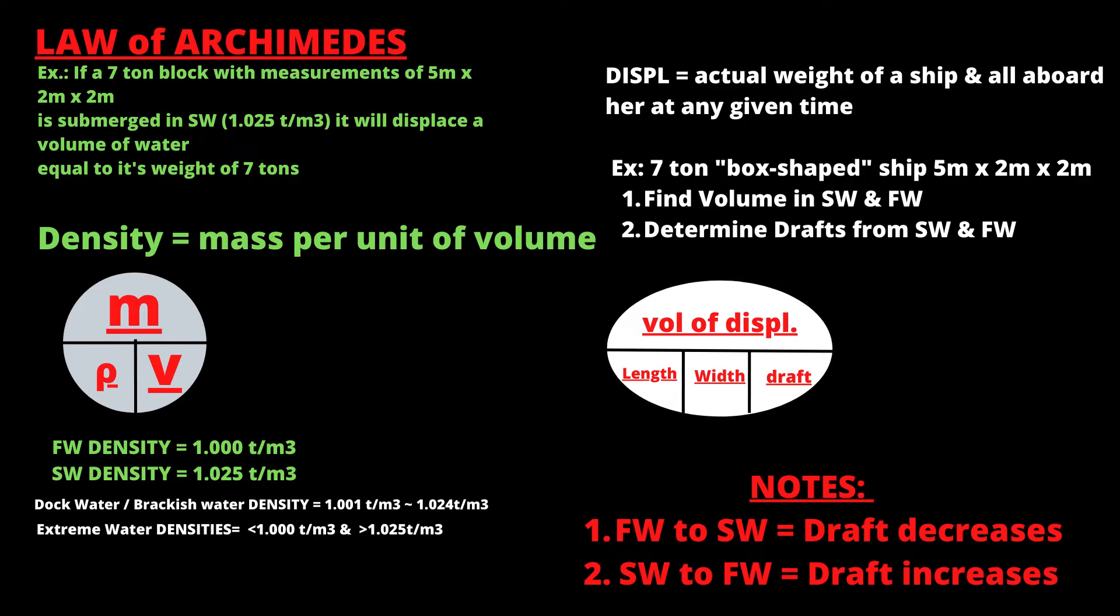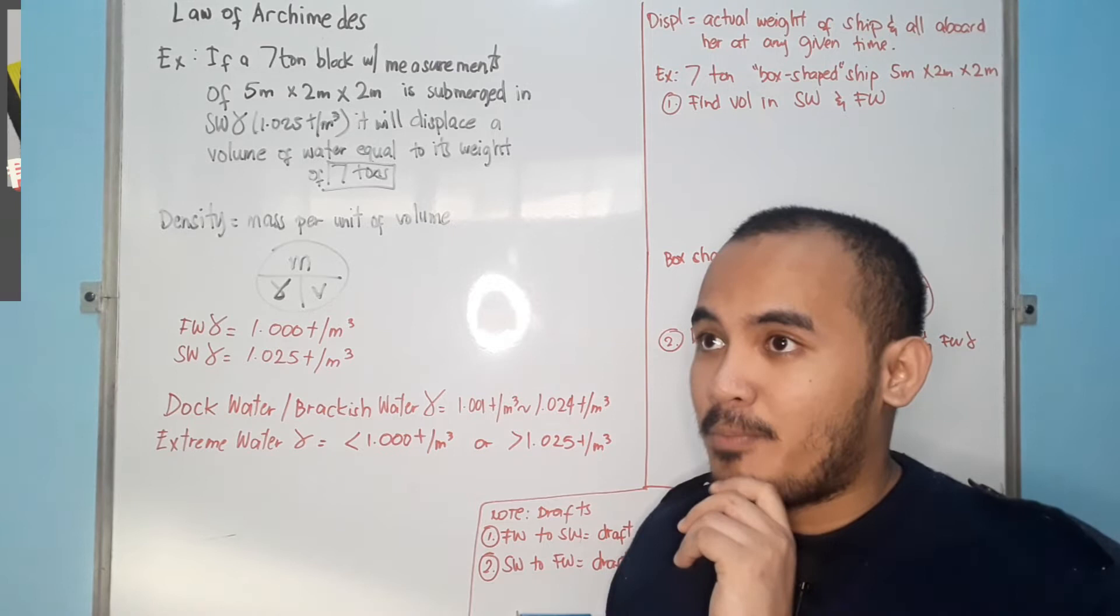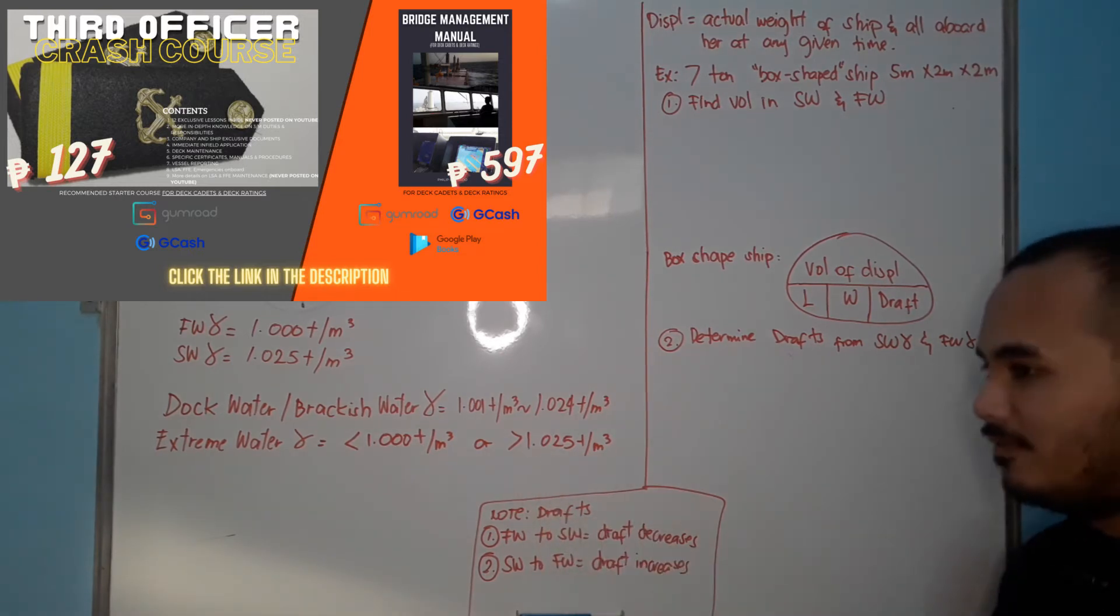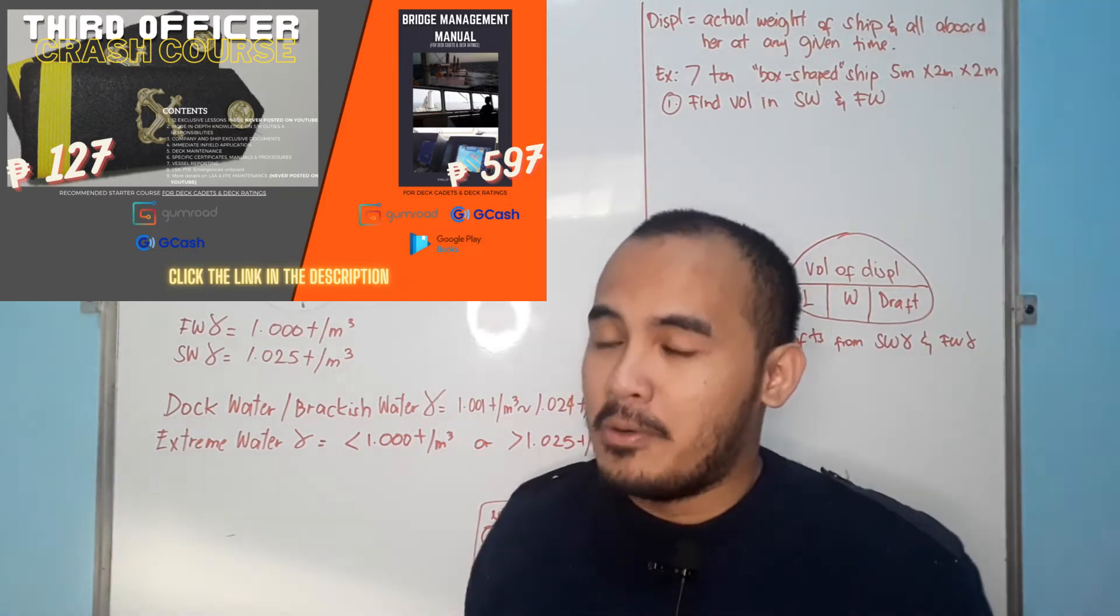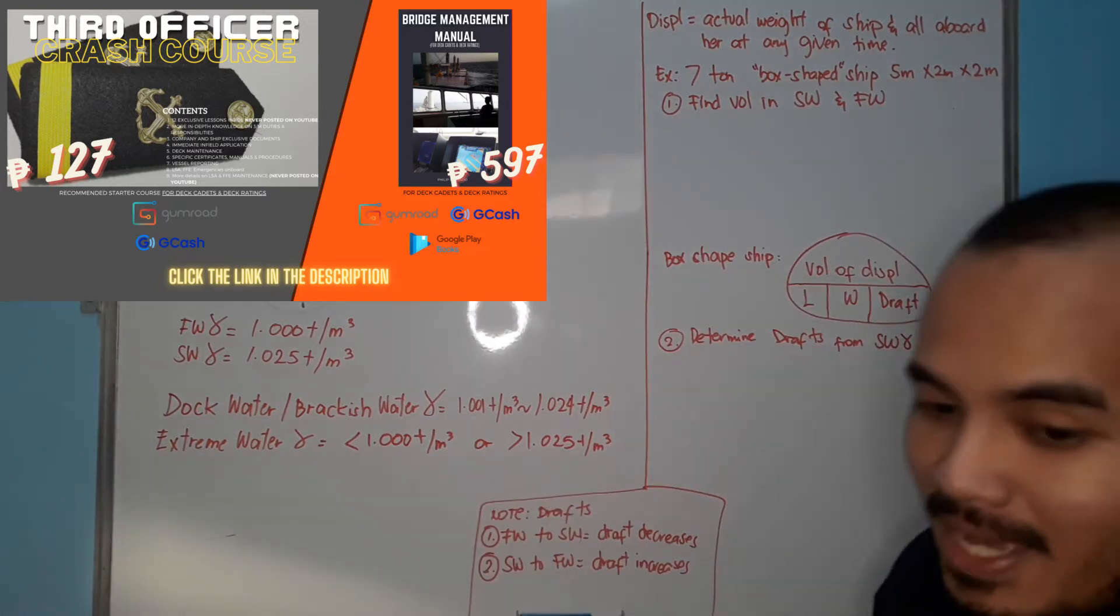Fresh water density is 1.000 tons per cubic meter. Salt water density or seawater density is 1.025 tons per cubic meter. Now, we should discuss about duck water and brackish water density. 1.001 to 1.024 is your brackish water or duck water in some books. And sometimes, you have this thing called extreme water density, which is less than 1.000 tons per cubic meter. For example, in Panama Canal, we've got densities of up to 0.99. Some cases, 0.98 tons per cubic meter in Panama Canal. Or extreme water density more than 1.025. For example, in Red Sea, if I remember correctly, we've got density of around 1.032 tons per cubic meter. This is your extreme water density.